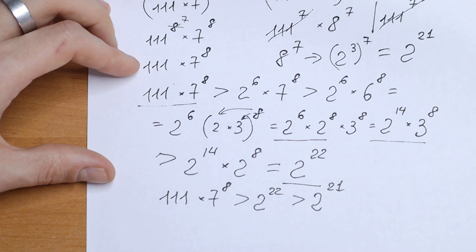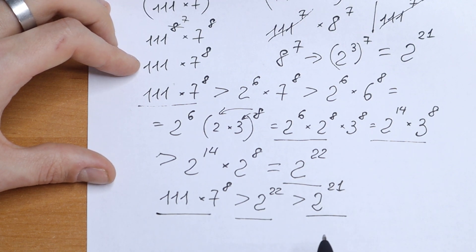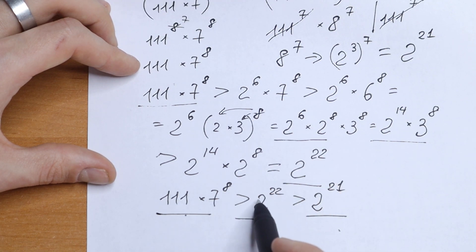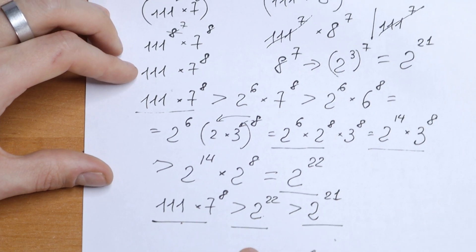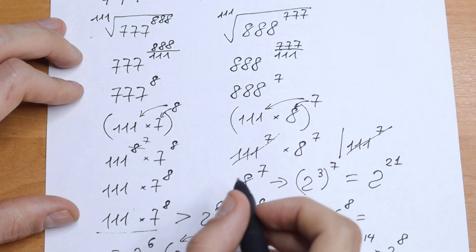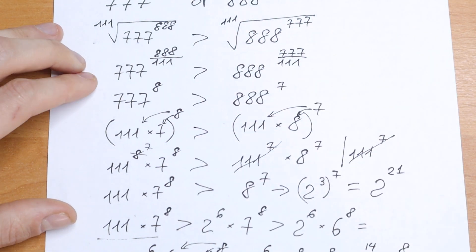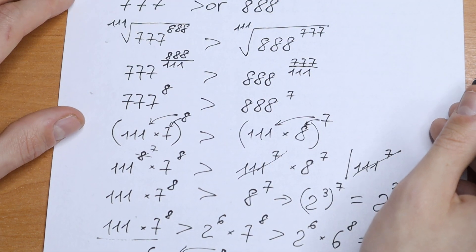So our left number is greater than 2 to the 22nd power, which is greater than 2 to the 21st power — our right number. And after all these steps, we can write the final answer: 777 to the power 888 is greater than 888 to the power 777.